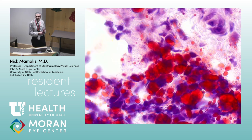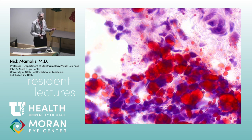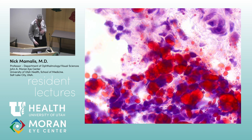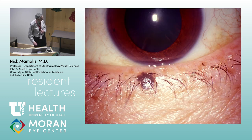What kind of stain is this? Oil Red O — just to show that we don't really do this anymore because we can do specialized immunohistochemistry stains, but again, Oil Red O for lipid in sebaceous carcinoma.